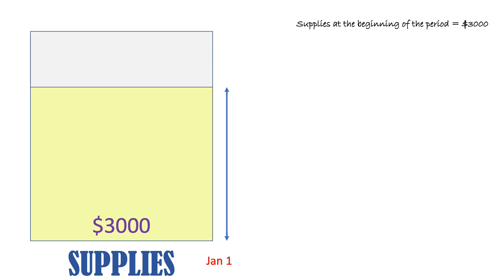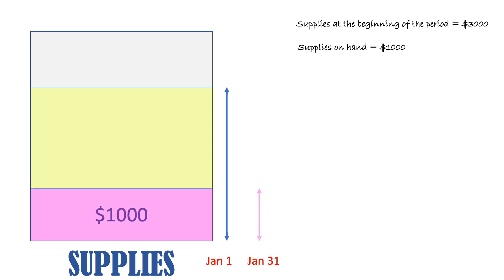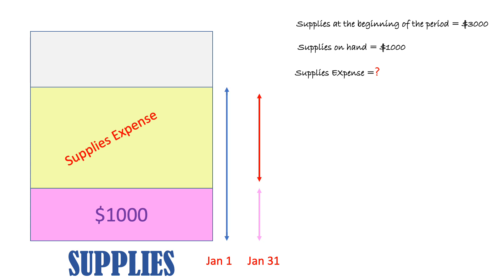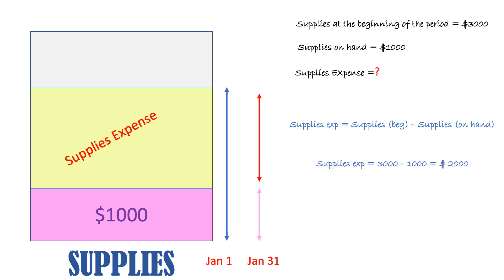This means supplies at the beginning of the period were equal to $3,000. On January 31 we checked and found that we still have $1,000 only, so supplies on hand equals $1,000. To prepare adjusting entries we need the supplies expense, which is the difference between what we had and what we still have. Supplies expense equals $3,000 minus $1,000, so our supplies expense equals $2,000.